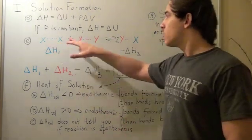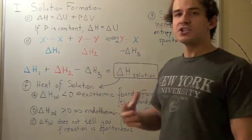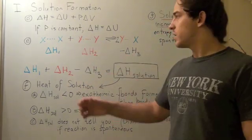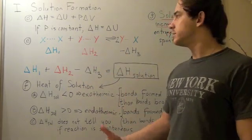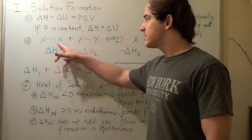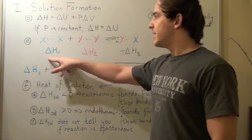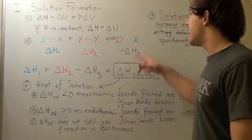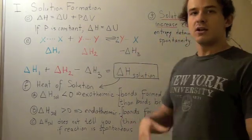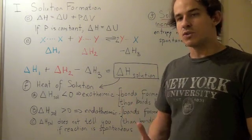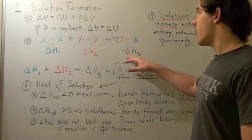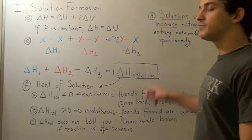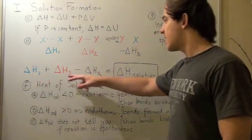Remember, when bonds are broken, the reaction is endothermic. Energy is required to break a bond. So the enthalpy of this system is positive. Enthalpy change of this guy is also positive. Now when bonds are formed, energy is released, they're exothermic. So the formation of Y and X is negative. Now if we add all these guys up, we get something called heat of solution.